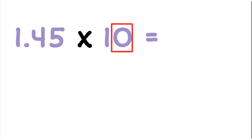In this case I have one zero. That tells me I want to move this decimal point here one space to the right. So that will move over and become 14.5.